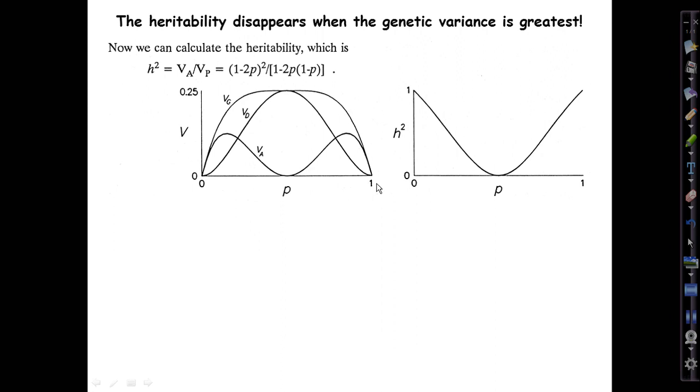Here's the graph of V-sub-a, the additive component, over the total V-G. It's very high at the ends when nearly all of the variance is additive. As the variance itself maxes out in the middle of the allelic frequency spectrum, the heritability hits rock bottom at zero when p is exactly half, because at that point all of the genetic and phenotypic variance is dominance variance.